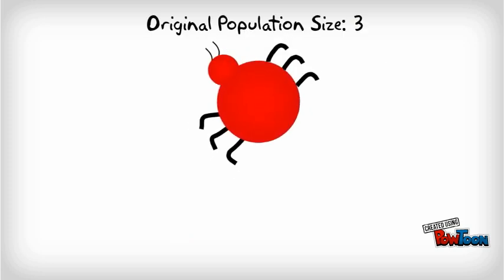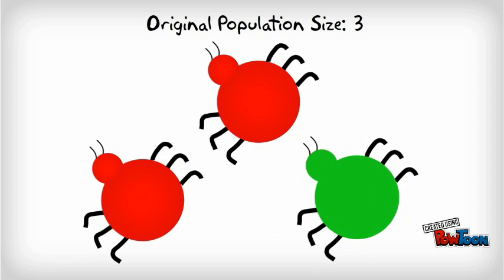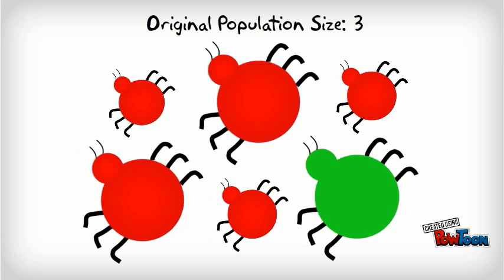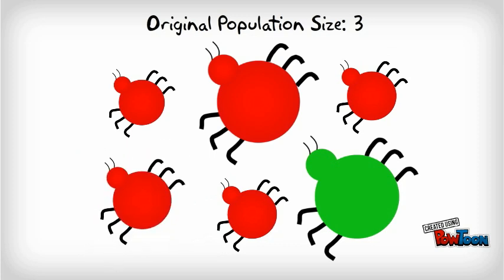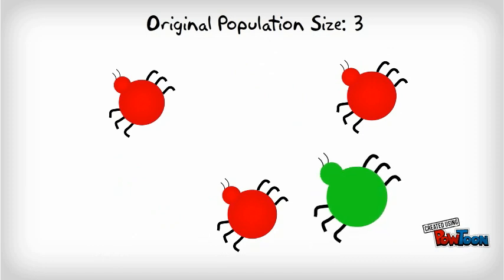For example, in one population of beetles, two are red and one is green for a total population of three beetles. This generation mates and their offspring have a 50-50 chance of being red or green. By chance, they have three offspring and all are red. Once the original generation dies, the entire population is now red.